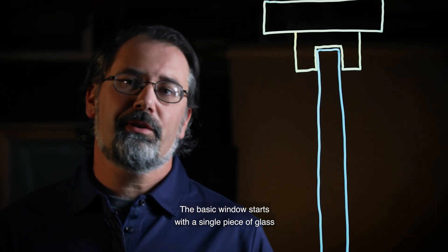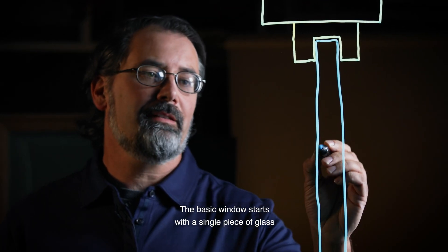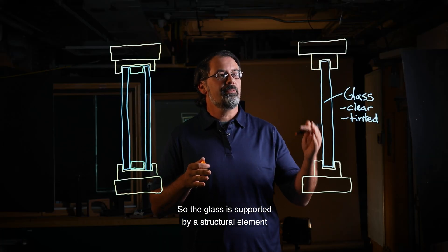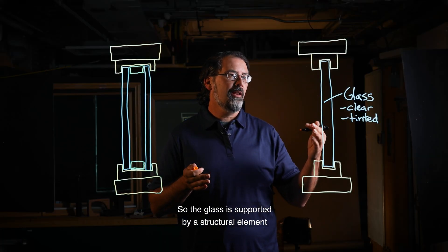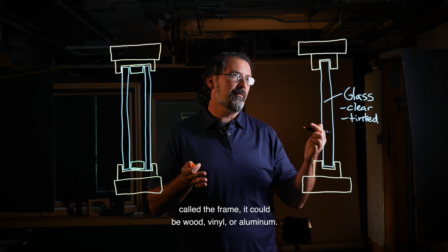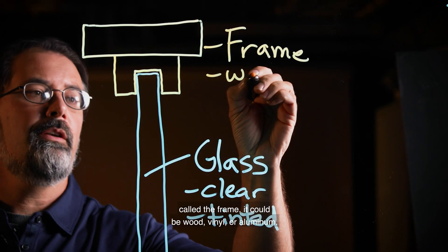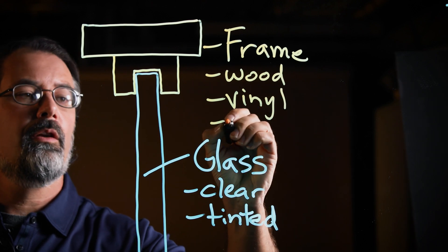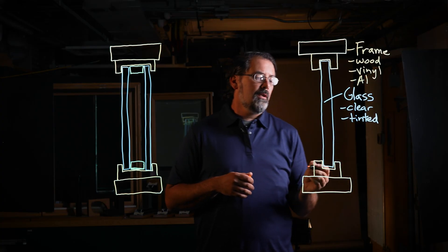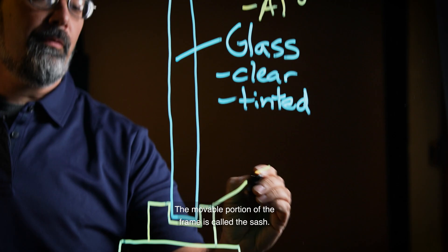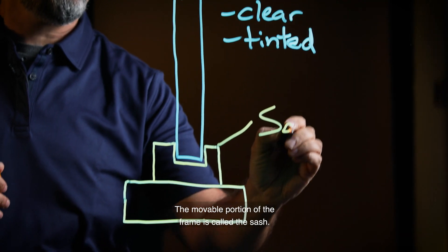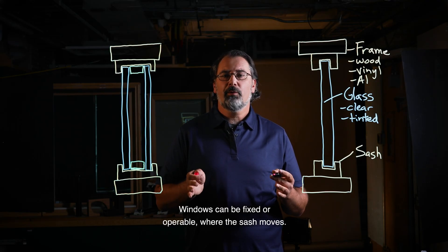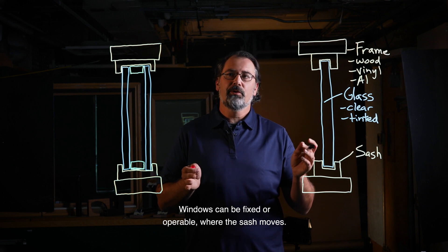The basic window starts with a single piece of glass, which could be clear or tinted. The glass is supported by a structural element called the frame. It could be wood, vinyl, or aluminum. The movable portion of the frame is called the sash. Windows can be fixed or operable, where the sash moves.